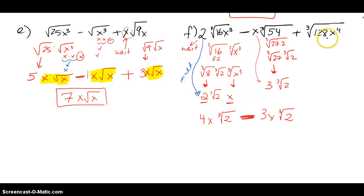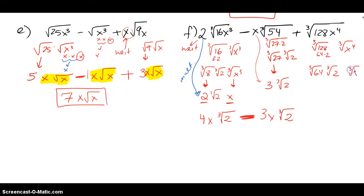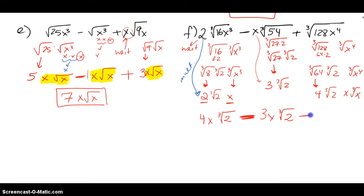For the last term, I think of ∛(128x⁴). 128 is 64 times 2, so I have ∛64 times ∛2 times ∛(x⁴). ∛64 pops out a 4 since 4³=64. ∛2 is stuck. For x⁴, there are four x's, so one x comes out and one x stays stuck. Ultimately I have 4x outside and ∛(2x) inside.